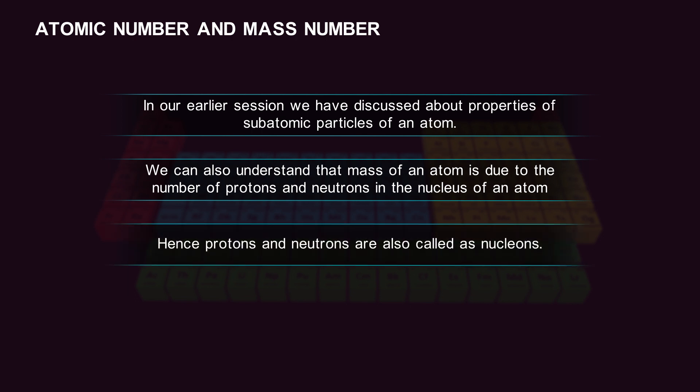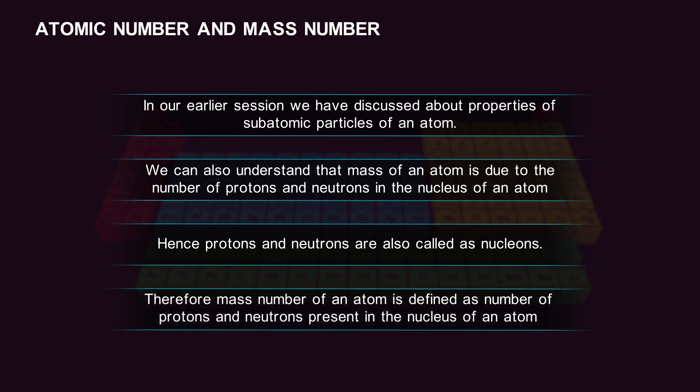Hence, protons and neutrons are also called nucleons. Therefore, the mass number is the sum of protons and neutrons present in the nucleus of an atom.